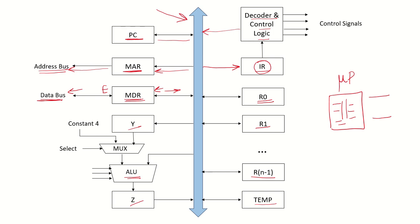Register Y is connected to one input of a multiplexer, and the other input of the multiplexer is connected to a constant 4. The output of the multiplexer goes into one port of the ALU, and the other port gets input from the internal bus. The computations done in the ALU have their result put in the Z register. There is also the TEMP register, which may be required by the processor for any temporary storage of data.